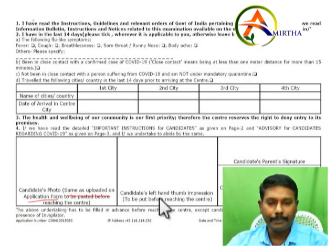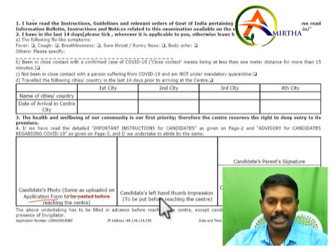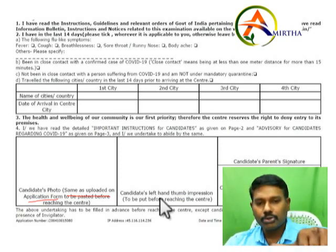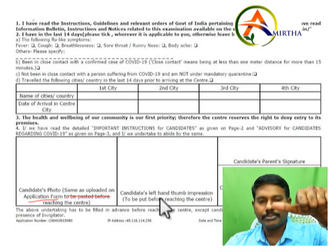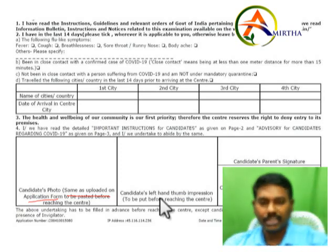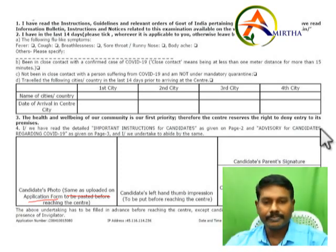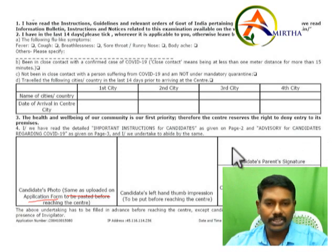You have to put the left thumb impression horizontally. You have to put the thumb in this manner — horizontal. And the next thing is the candidate's parent signature.